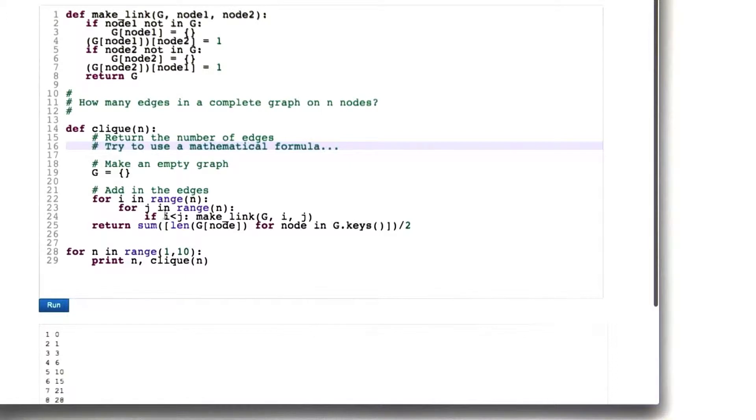To make a complete graph, I just looped through all the pairs of nodes, and if one node was smaller than the other, then I made a link between them. That was mainly to just make sure I didn't make a link from nodes to themselves. There was no reason not to make a link the other way. It would have not counted against the total, but this seemed nicer and cleaner.